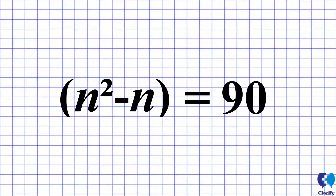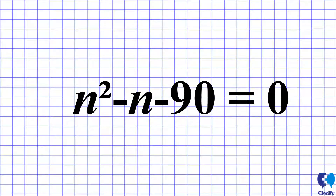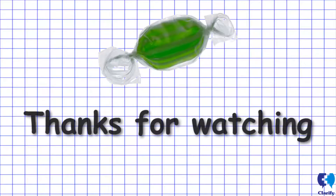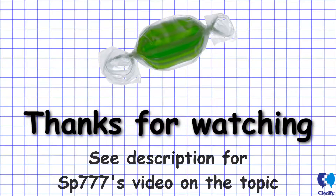Making the equation equal to zero means that n squared minus n minus 90 equals zero. After solving for n, you find that n is equal to 10. So that is Hannah's sweet problem explained.